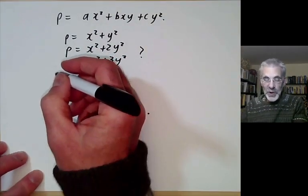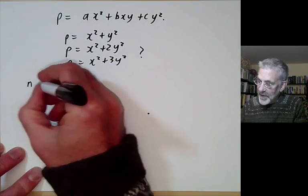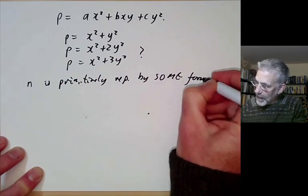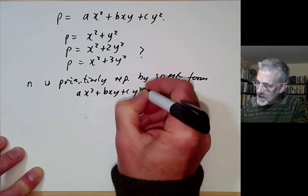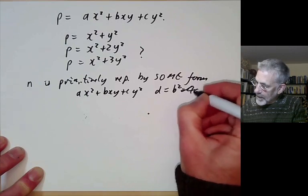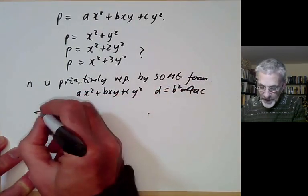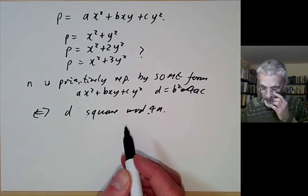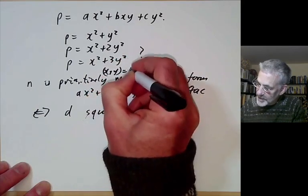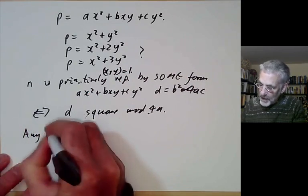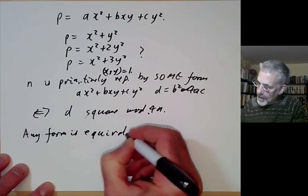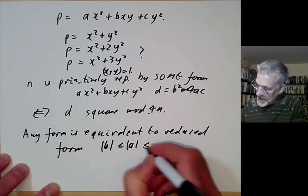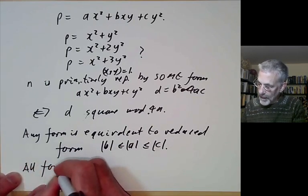Before doing this, let's recall some previous results. A number n is primitively represented by some form ax² + bxy + cy² with discriminant d if and only if d is a square mod 4n. Primitive means x and y are co-prime. We also saw that any form is equivalent to a reduced form satisfying |b| ≤ a ≤ c. We're going to take all forms to be positive definite.